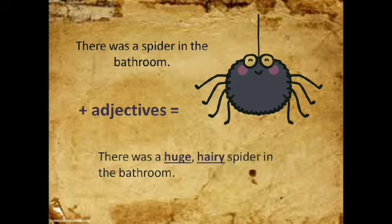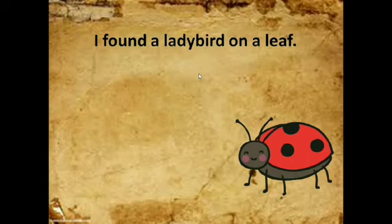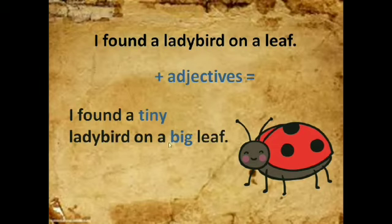Here's another example: I found a ladybird on a leaf. I have two nouns here. Can you find them? That's right, it's ladybird and leaf. Now, can you describe them? I found a tiny ladybird on a big leaf. Tiny means very small. So tiny describes the noun ladybird, and big is an adjective that describes the noun leaf.